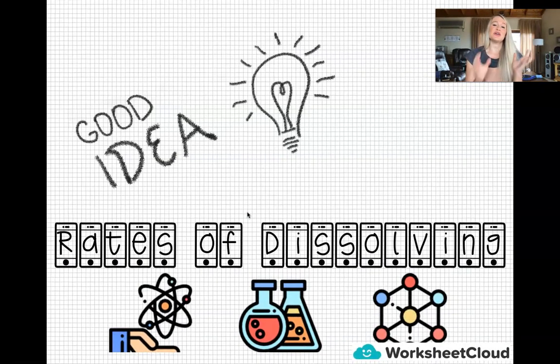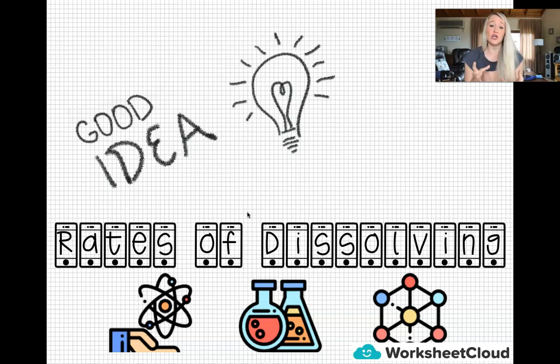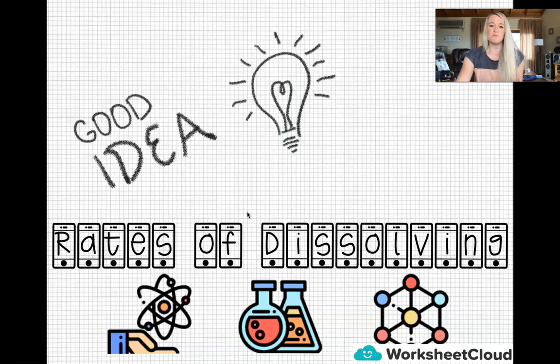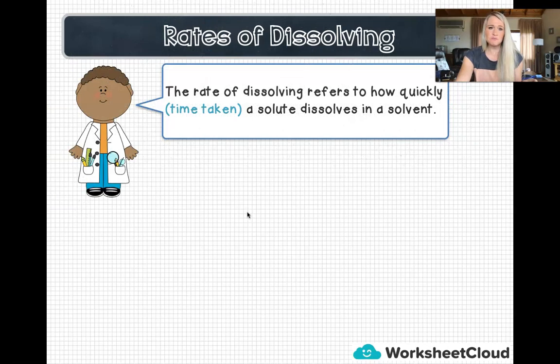Now we're going to look at the rates of dissolving. If you want to dissolve a solute, we can speed up the process by different measures. The rate of dissolving refers to how quickly or the time taken for a solute to dissolve in a solvent. So when you talk about rate, time taken, those two concepts go hand in hand.